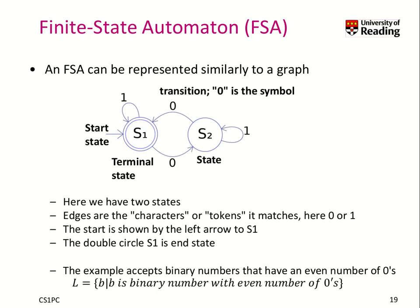And then we have edges. Edges are the transitions, and on the transitions we write the symbol that is used to make the transition. Here we have the start state as one. If we read a one from the input, we follow this edge and go back to state one. If we read a zero, we go to state two. From state two, if we read a one, we go back to state two, but if we read a zero, we go back to state one.